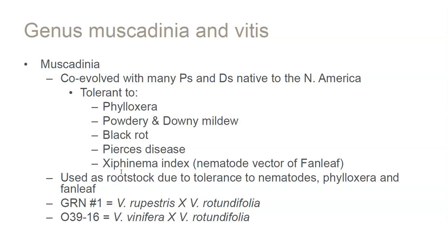We can use Muscadinia rotundifolia in rootstocks to help combat these issues. Rootstocks like GRN1 and O3916 have rotundifolia in the parentage. These rootstocks are usually used in areas where you have the vector Xiphinema index. They are tolerant of the vector but also somewhat tolerant of the virus itself.